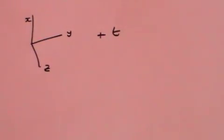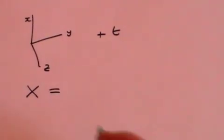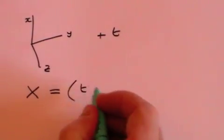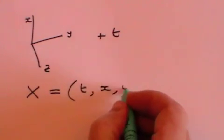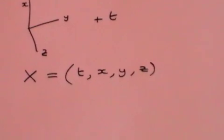And so we create a four vector, which I'm going to call capital X, and the four components of that vector are T for time, X, Y, and Z representing the three spatial dimensions.